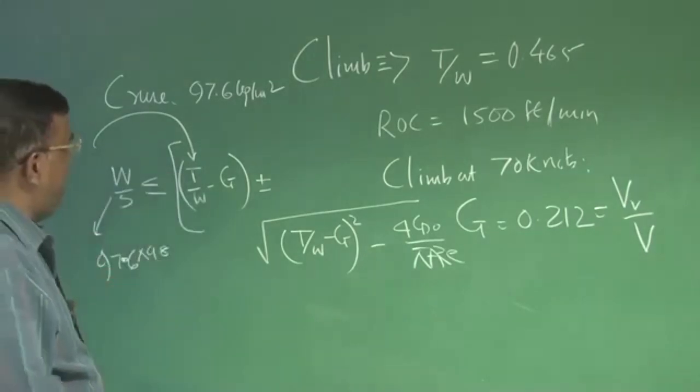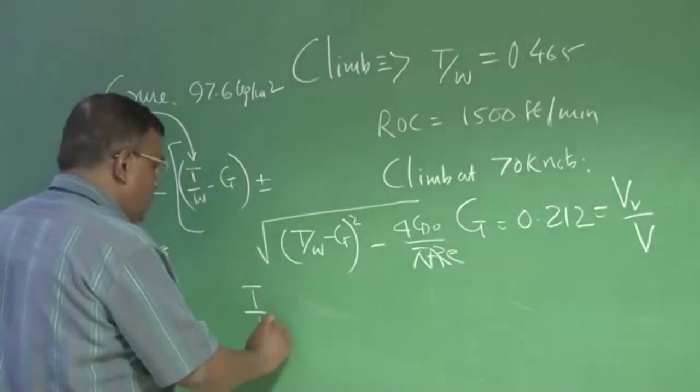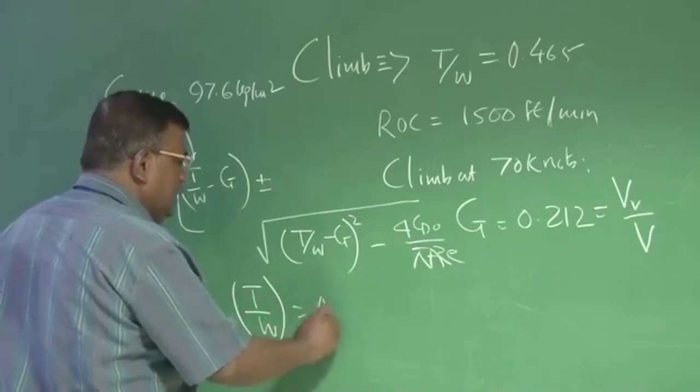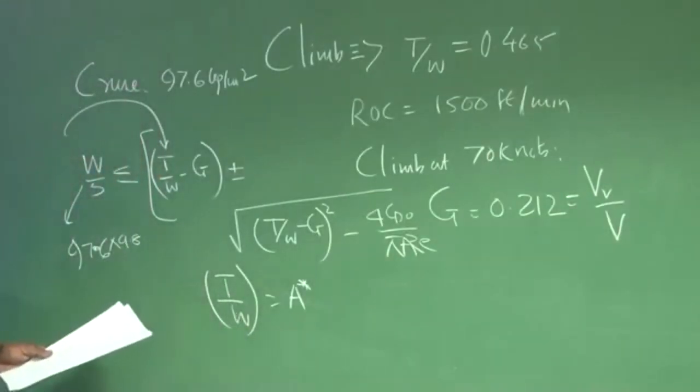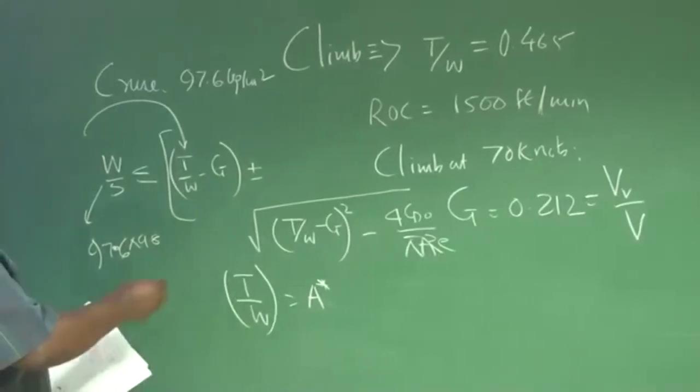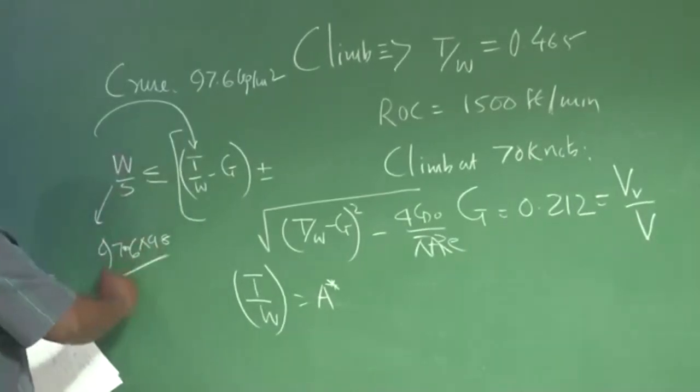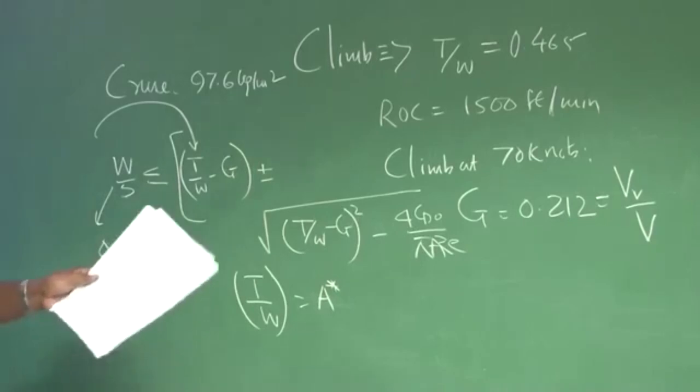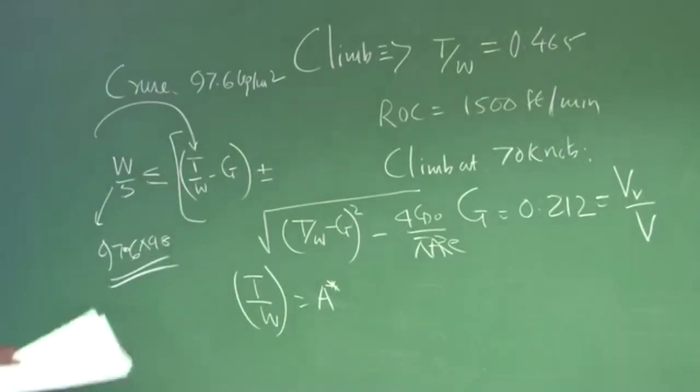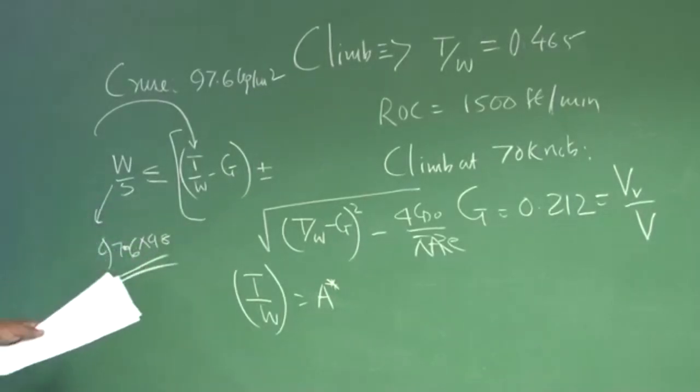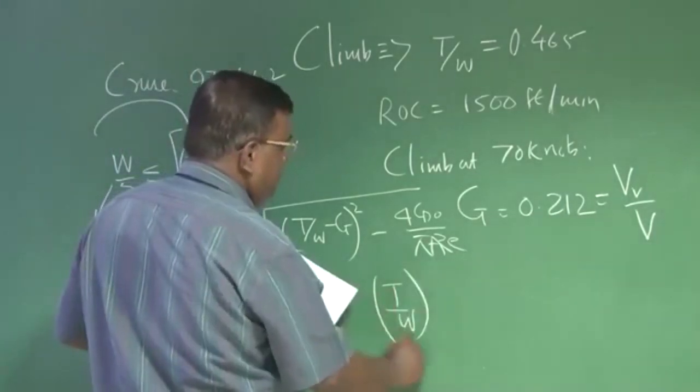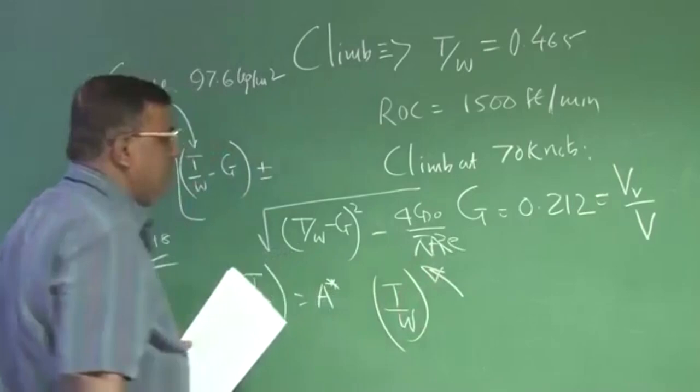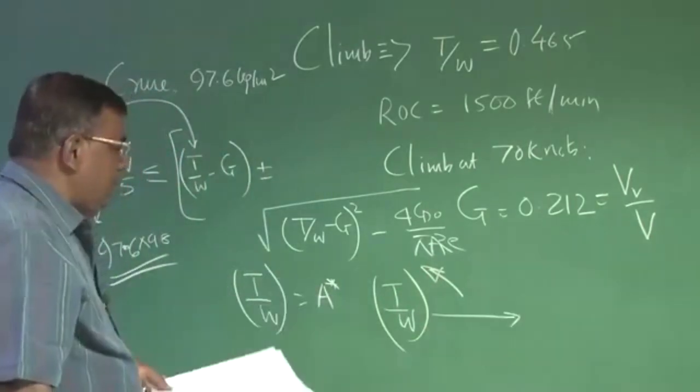But we have seen T by W equal to A star, which I am getting by putting the W by S as whatever is prescribed by cruise condition. I put that value here, and I find what is the T by W coming from this expression, from here, giving everything same.